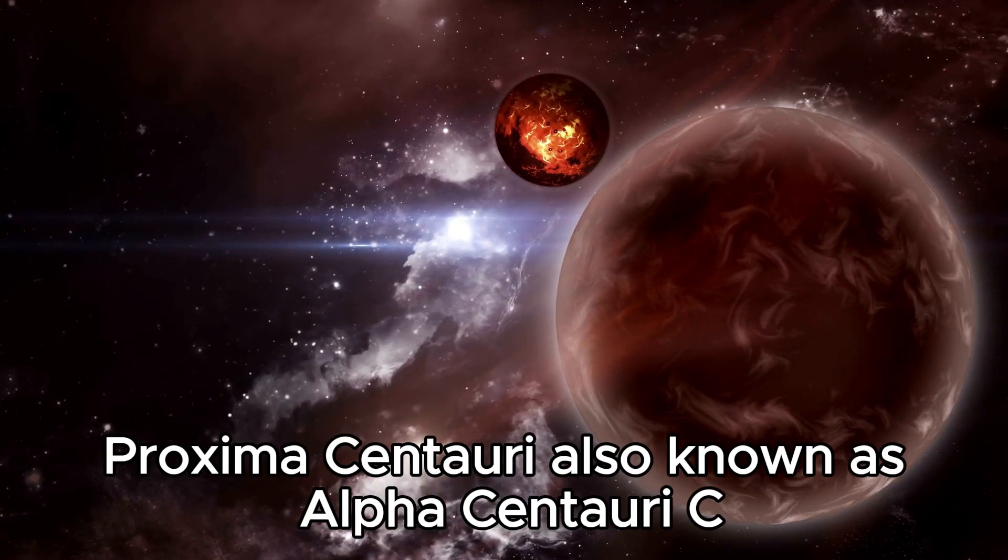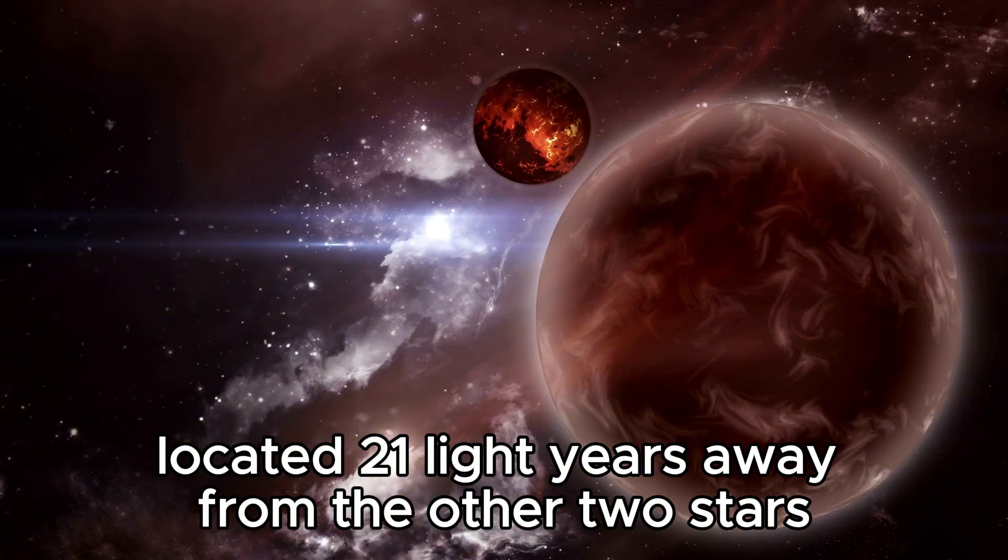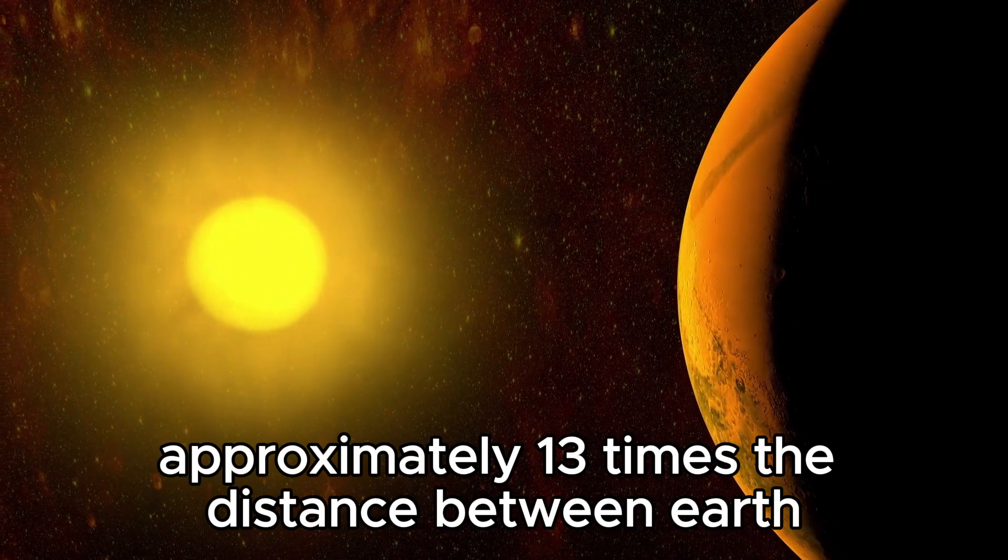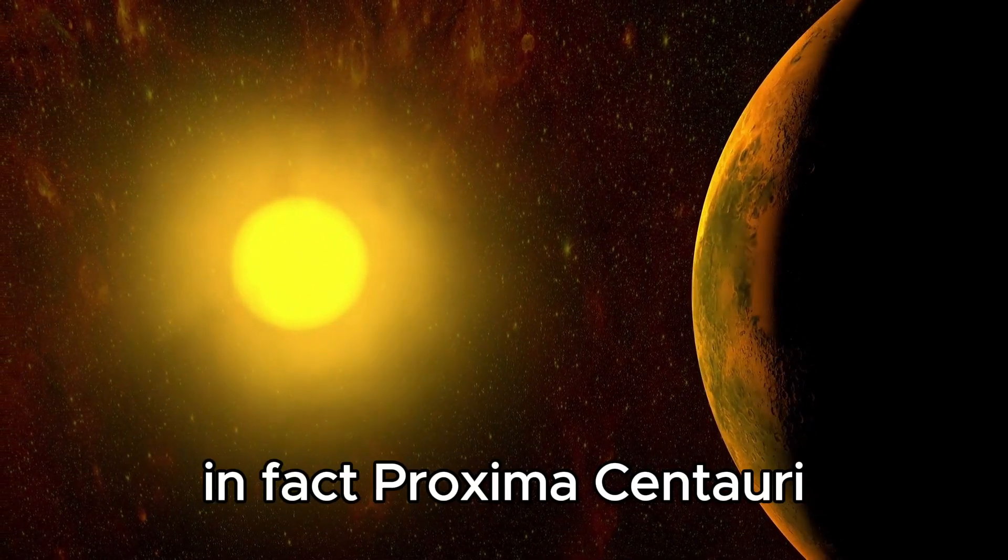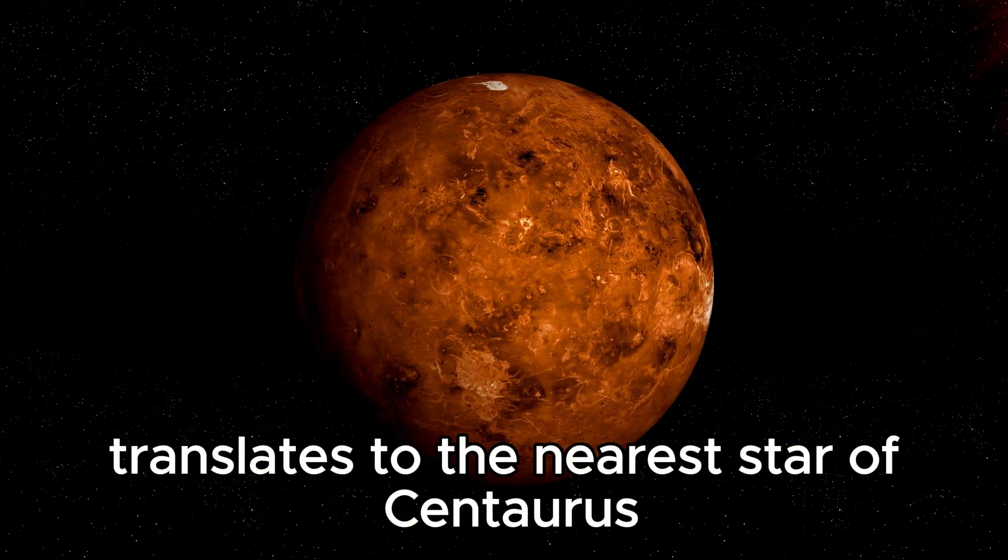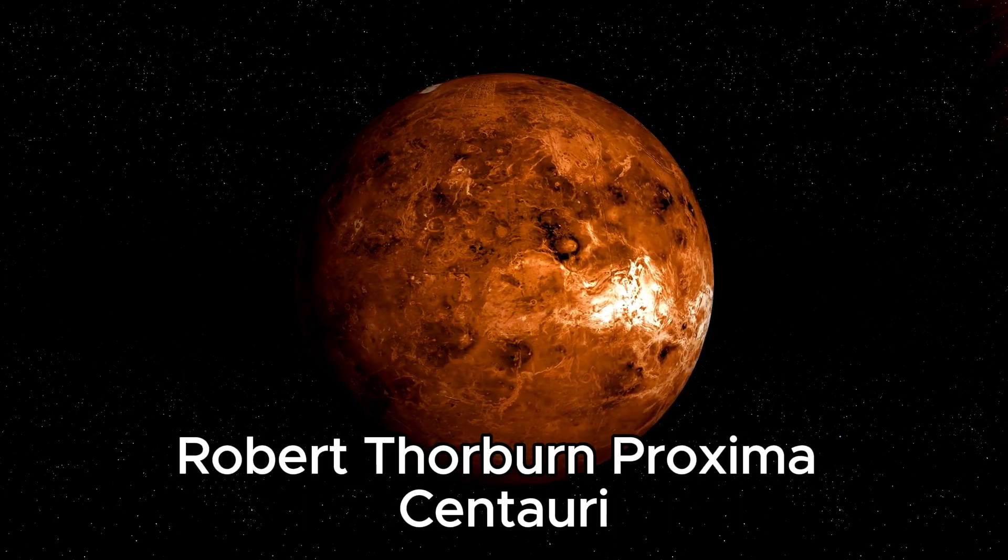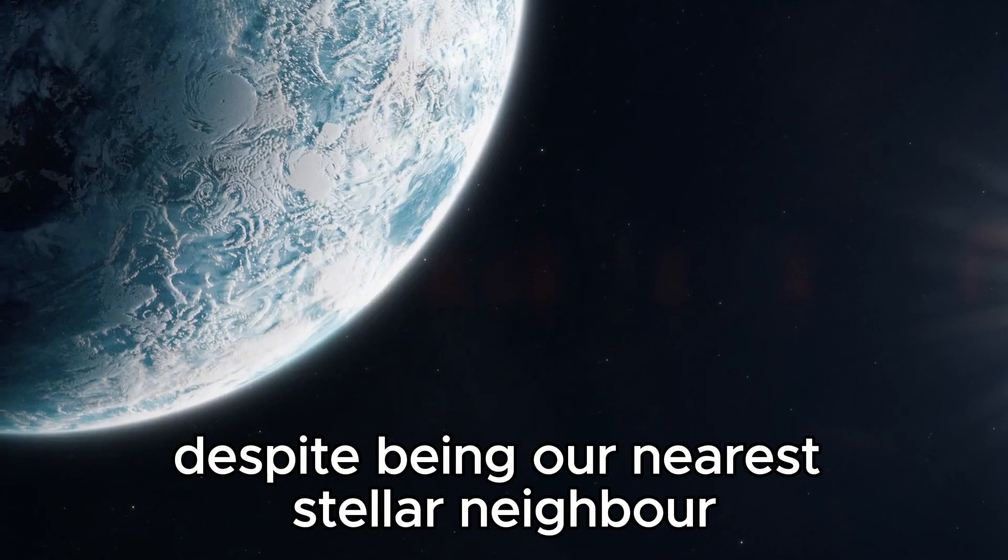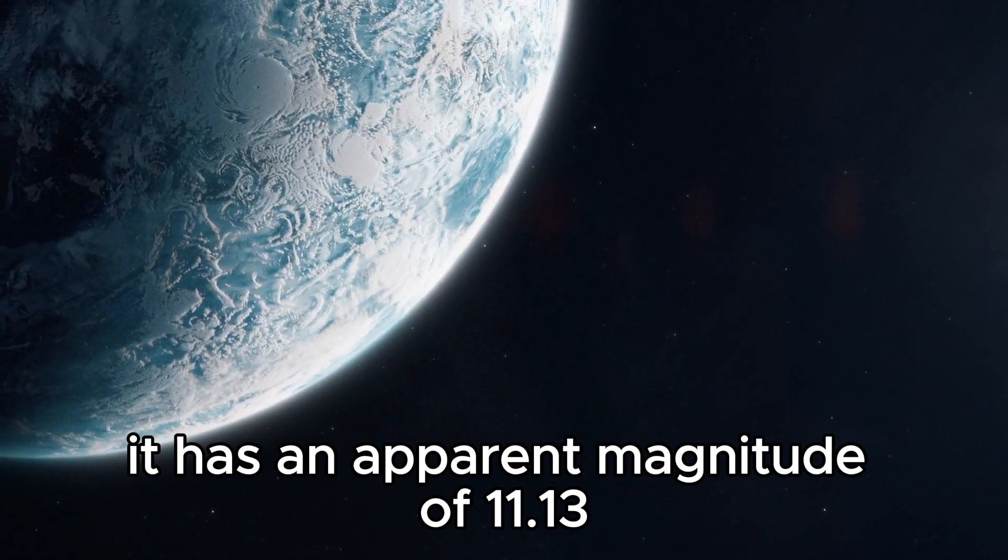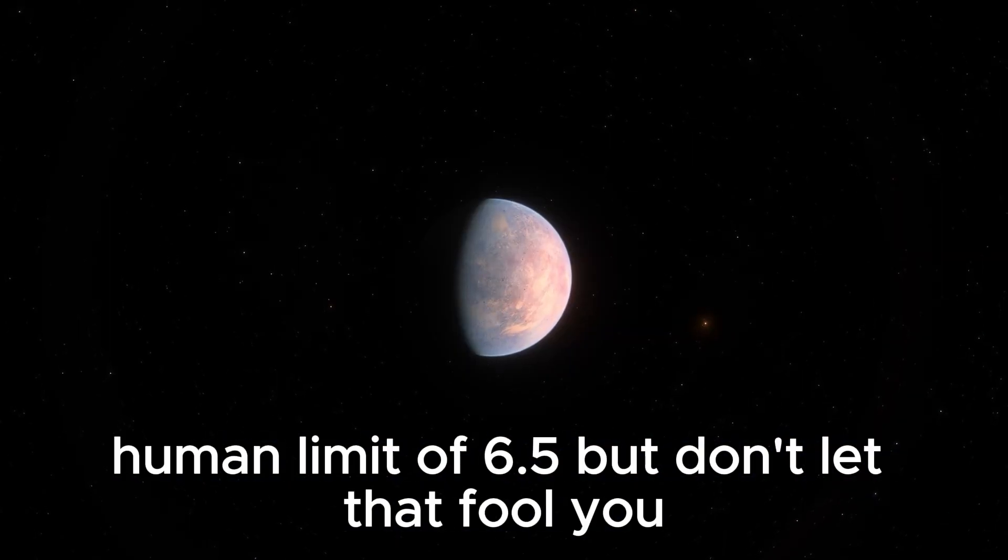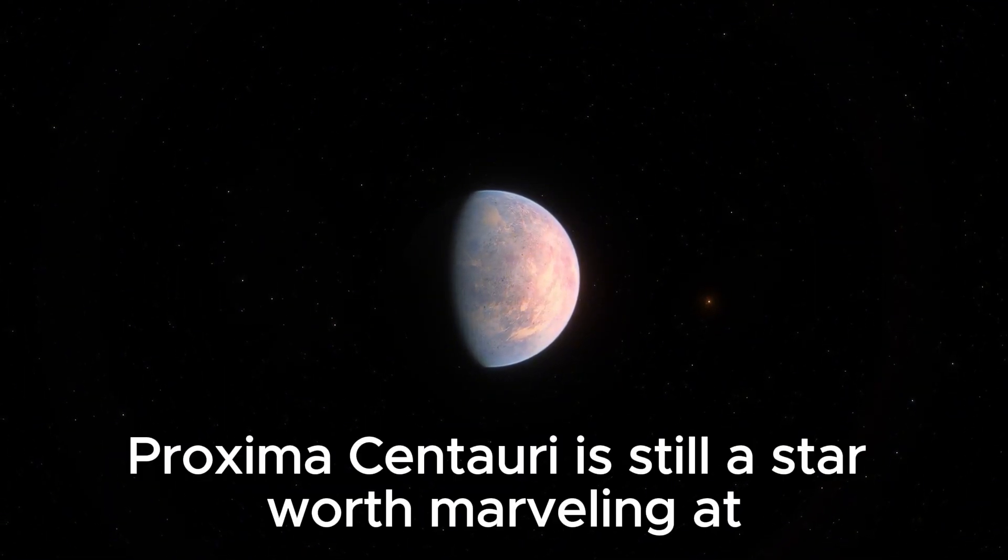Proxima Centauri, also known as Alpha Centauri c, is a red dwarf or M star located 21 light-years away from the other two stars, approximately 13 times the distance between Earth and the Sun. It is technically the nearest star to us. In fact, Proxima Centauri translates to the nearest star of Centaurus in Latin. Discovered in 1915 by Scottish astronomer Robert Thorburn, Proxima Centauri, despite being our nearest stellar neighbor, is not visible to the naked eye. It has an apparent magnitude of 11.13, which is far greater than the maximum human limit of 6.5. But don't let that fool you. Proxima Centauri is still a star worth marveling at.